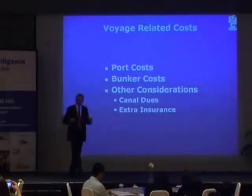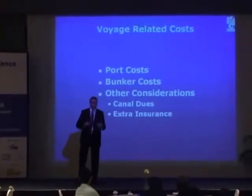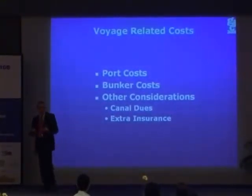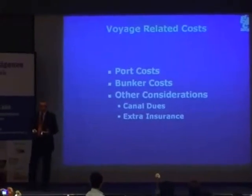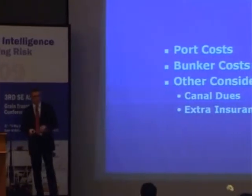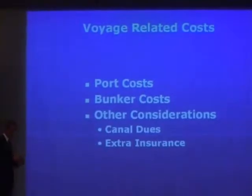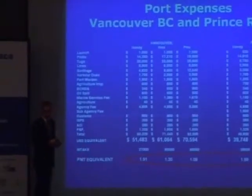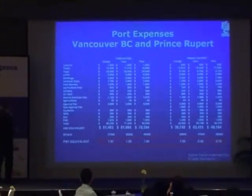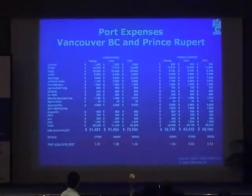When you decide to deploy the vessel on a trade, besides incurring direct operating costs, you're also going to incur voyage-related costs. These have to be factored into the floor price as well. These are port costs, bunker costs, and other costs such as canal dues, extra insurance if the trade involves a war risk area, et cetera. Port expenses in Vancouver, BC, about $60,000, work out to $1.30.